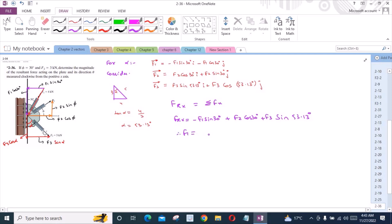Now, F1 is equal to 4 kN, F2 is equal to 3 kN, and F3 is equal to 5 kN. So FRx becomes negative 4 sin 30 plus 3 cos 30 plus 5 sin 53.13 degrees. FRx is equal to 4.6 kN.